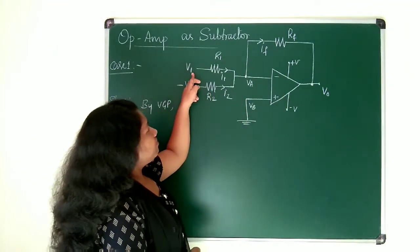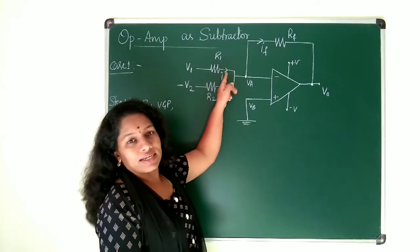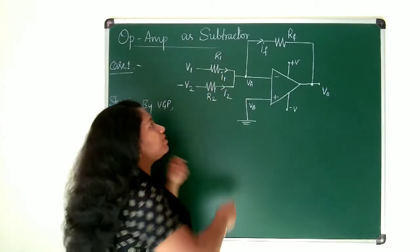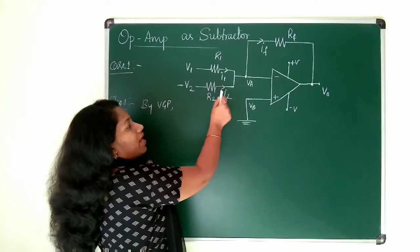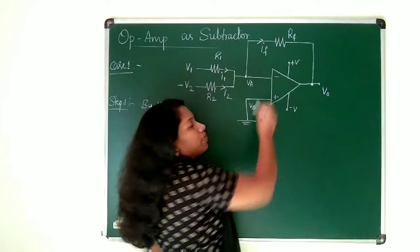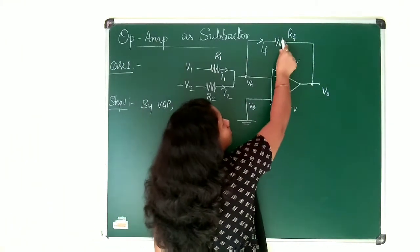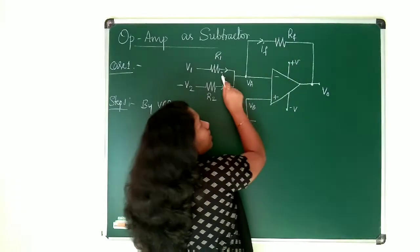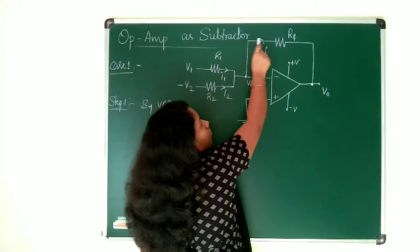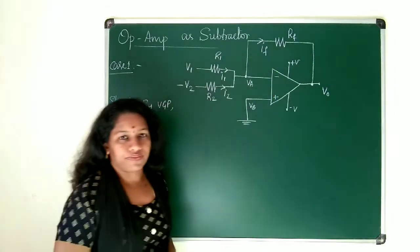Here I have given V1 through R1 resistor and current flowing through that is represented as I1. Similarly V2 is applied through this R2 and current flowing is represented as I2. And to have a proper gain I need to have a feedback that I have done by using this RF resistor and current flowing here is moving in this path so that I can represent this current as IF.